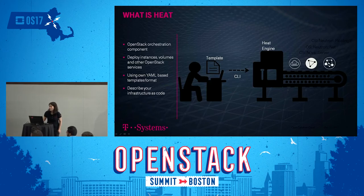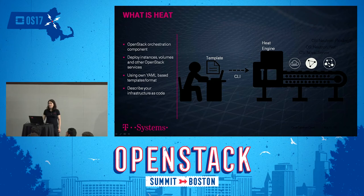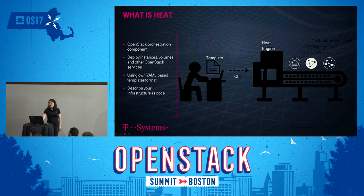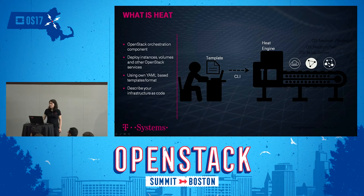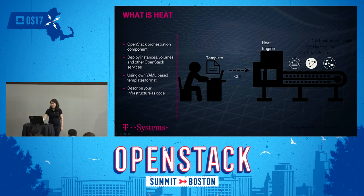On the next slide, I would like to show a really simple overview of how it works. You have your template file where you define how your infrastructure should look like, and you have a command line or an API interface, which then tells the HEAT engine what to do. The HEAT engine does all the work, and at the end you will have resources like VMs, networks, IP addresses, and software deployments as output. These templates are YAML-based format and describe how your infrastructure should look like, meaning you can reproduce your infrastructure every time with the same template, which is quite neat.